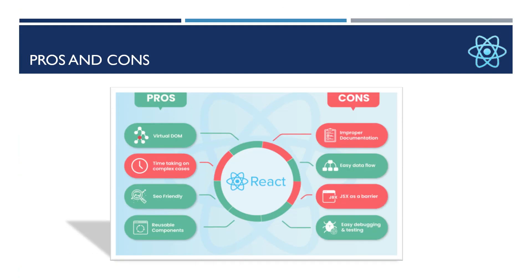Now for pros and cons — everything has them, and React is no different. A major pro is React's support for virtual DOM, which has a tree-based structure. We can explore our components and states, and dig from the higher level down to the lower level to figure out what the states and values are. We can easily see the HTML DOM in the virtual DOM and figure out from debugging what values we're looking at and how to interact with those virtual DOM components.